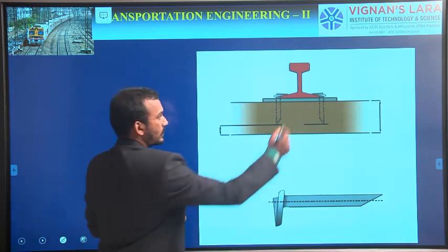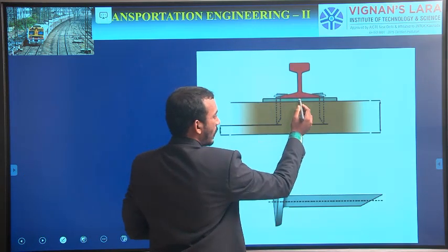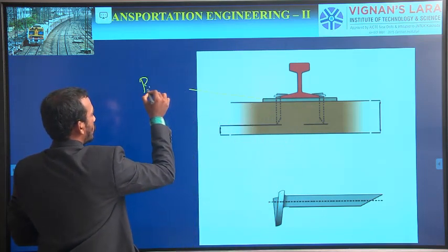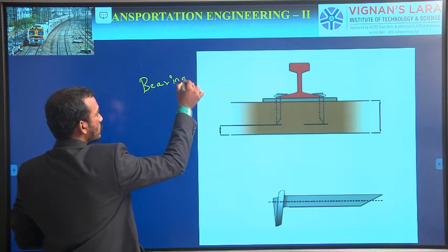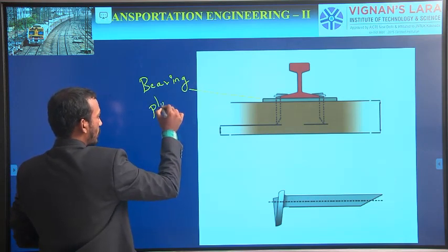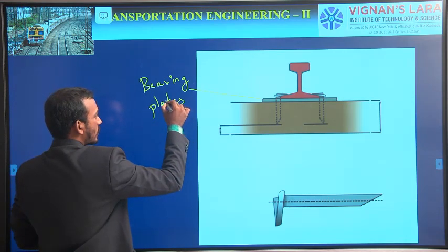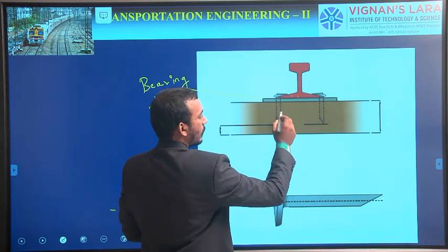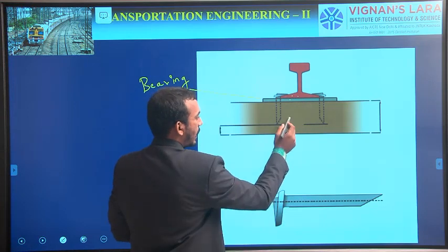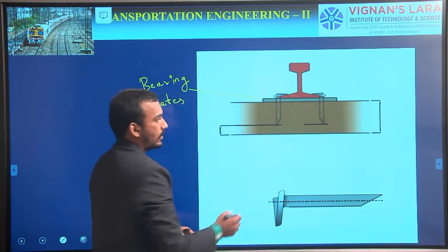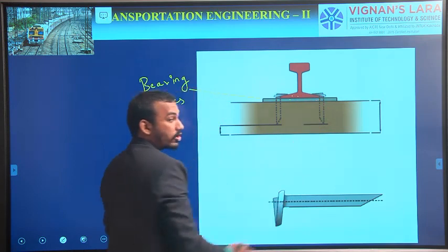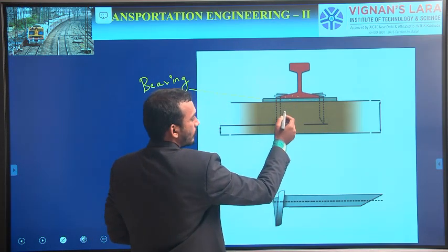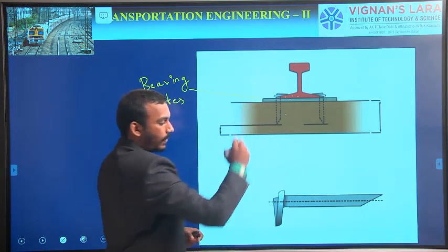This is the dog spike. This is our flat-footed rail, and below the flat-footed rail, this is a bearing plate. As we already discussed, bearing plates are used only for wooden sleepers. The spikes are also used for wooden sleepers only. It is the flange of the rail, then the bearing plate, and this one is the sleeper. The dotted lines shown are the dog spikes — see how they are inserted to hold the flange of the rail with the sleeper and base plate.